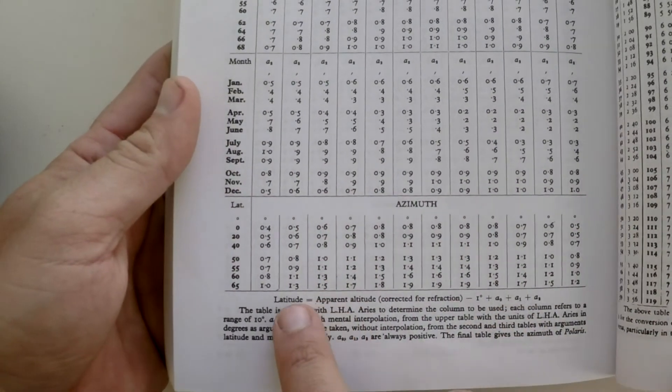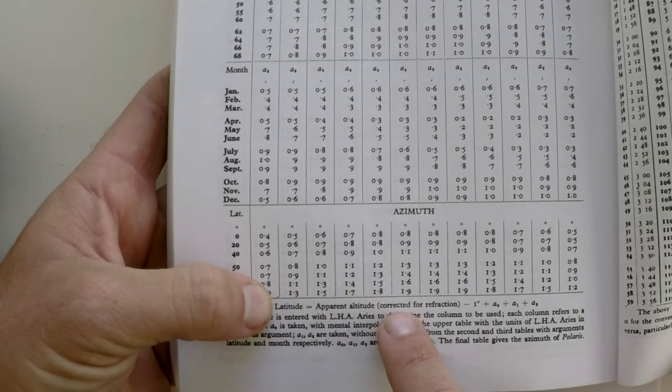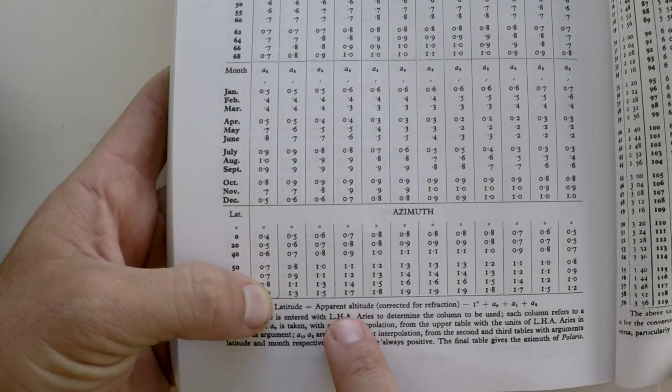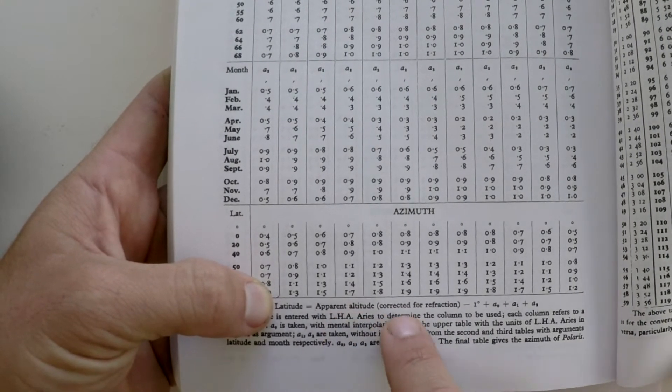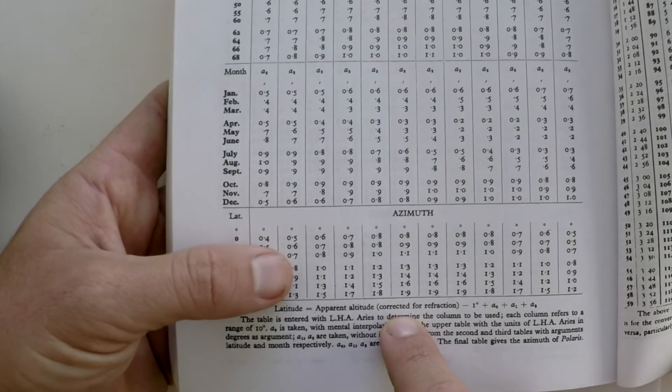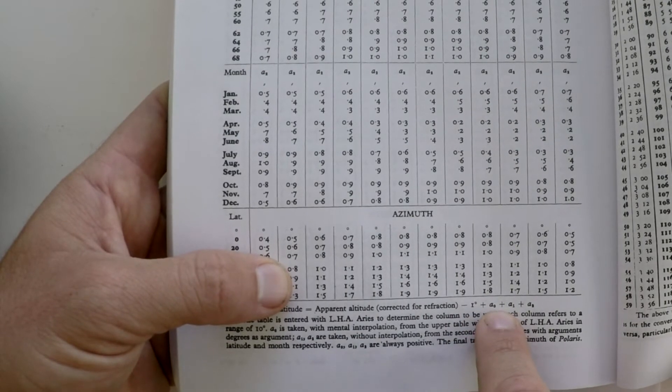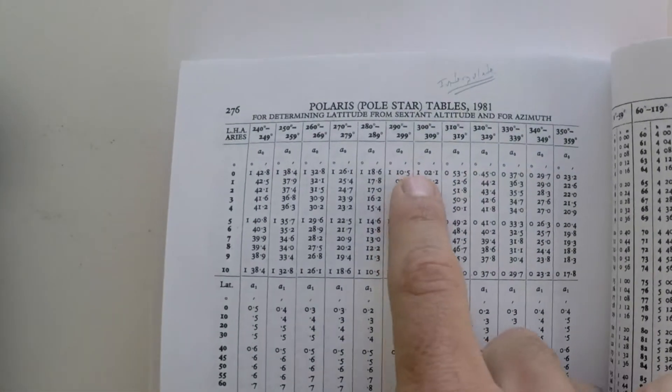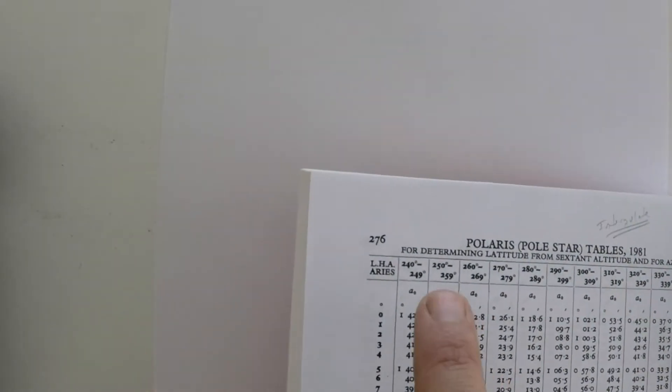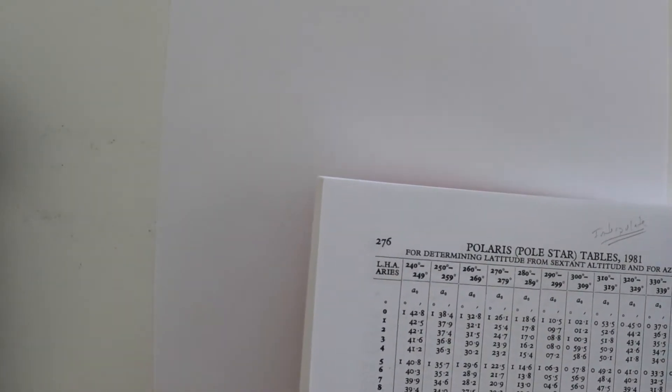Once we have those pieces of information, down here at the bottom of the page it gives a formula. It says your latitude is equal to your apparent altitude corrected for a fraction - so that is our sextant observation corrected for height of eye, index error, and the star correction - minus one degree plus these three corrections A0, A1, and A2. So if we can simply get the LHA of Aries, we can use this table and rapidly get our latitude.